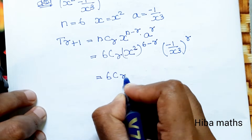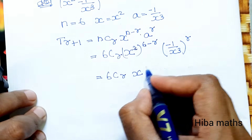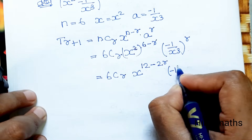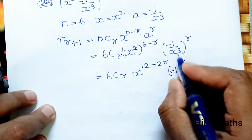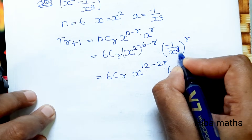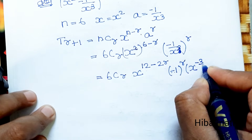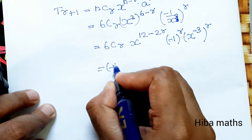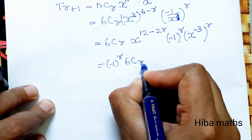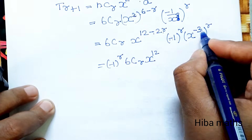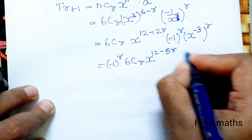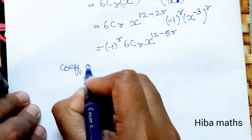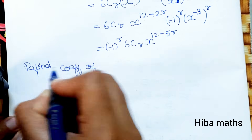Simplifying: T(r+1) = 6Cr · x^(2(6-r)) · (-1)^r · x^(-3r) = (-1)^r · 6Cr · x^(12 - 2r - 3r) = (-1)^r · 6Cr · x^(12 - 5r). Now we will find the coefficient of x power 6.